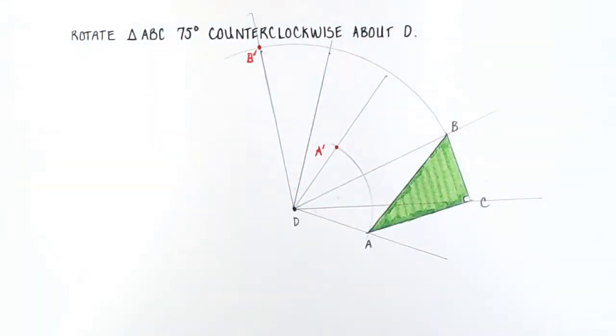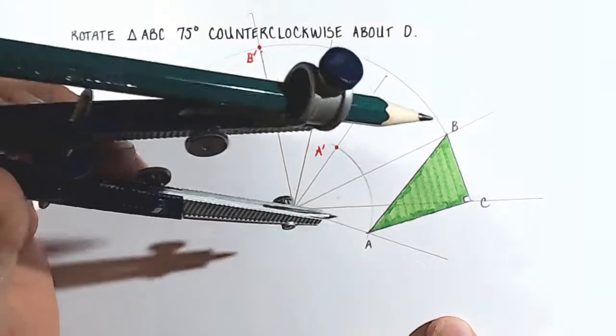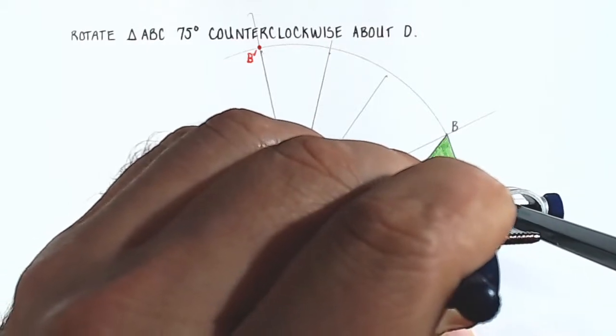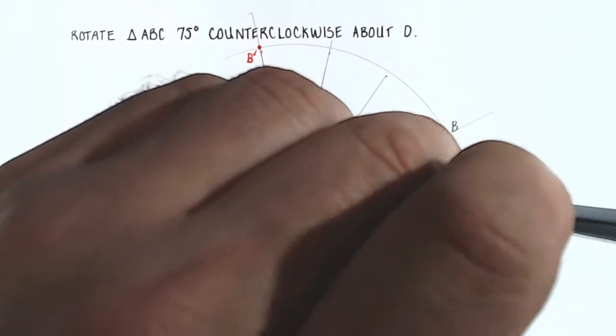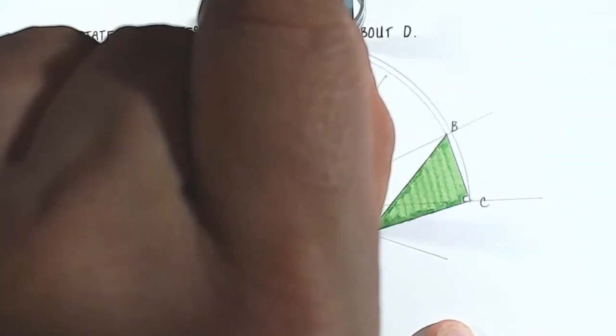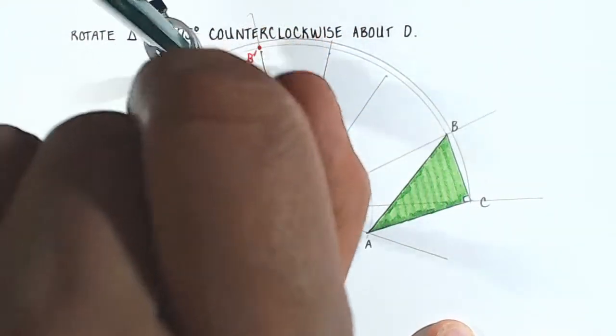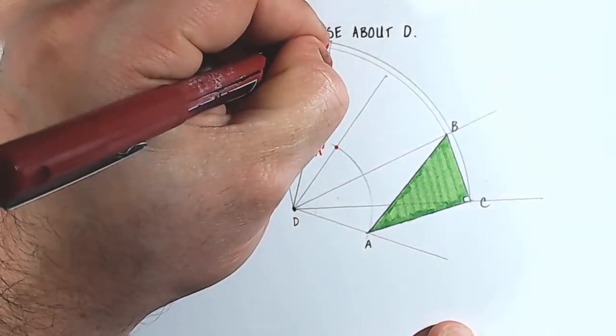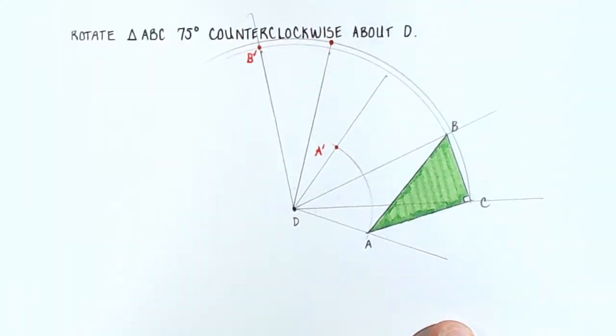And then I will take my compass and change the compass length from D to C. Okay, and now I'm going to rotate my arc straight through like this. And I see where they intersect right here. That will be C prime.